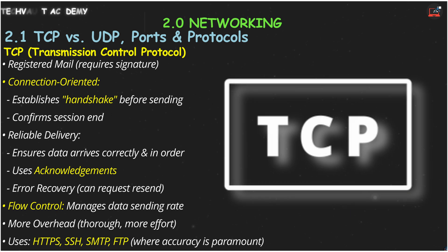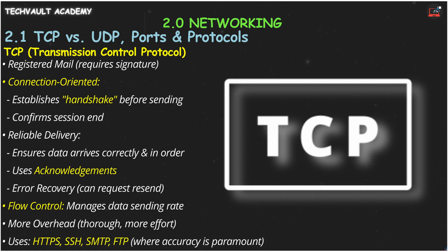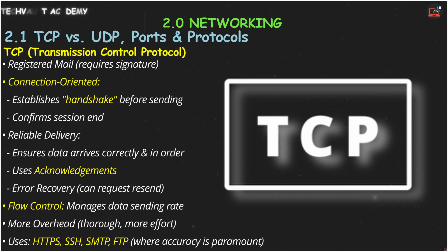TCP provides reliable delivery — it makes sure all data arrives correctly and in order. It uses acknowledgments, meaning the receiver sends back confirmations. It can recover from errors; if parts are missing or damaged, TCP can request them to be resent. It also manages flow control, preventing the sender from overwhelming the receiver.